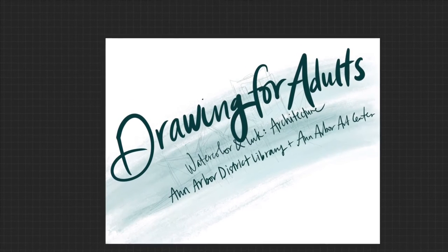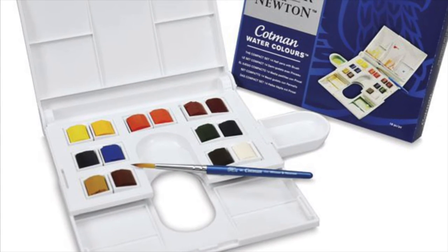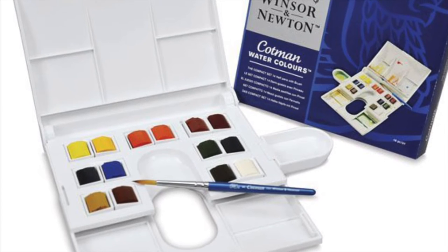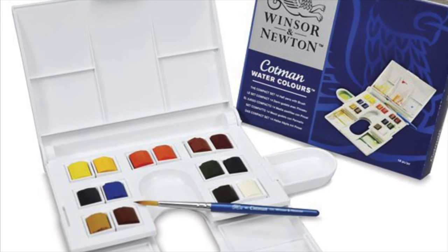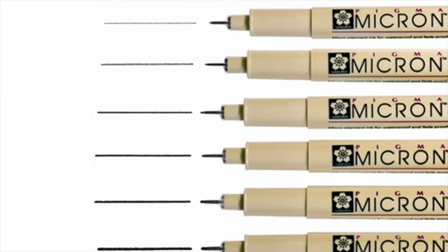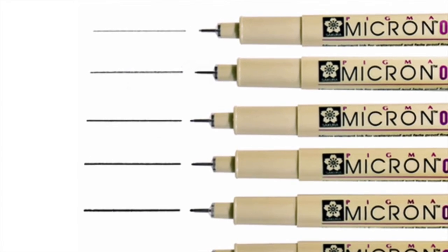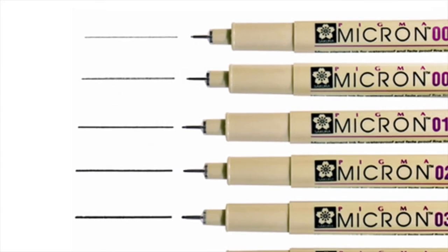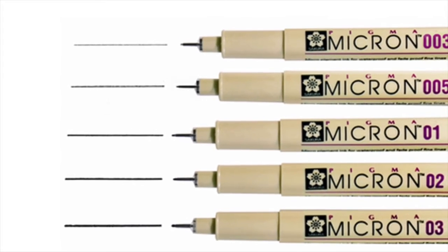We are doing a watercolor ink series where we're talking about architecture this week. If you don't have watercolors or ink pens, I really like this little travel set by Winsor & Newton, but any watercolors will be great. In ink pens, I also really like these Pigma Micron pens. That's what I prefer to use when doing any kind of ink line work because there's a variety of line widths. So we're going to be talking about architecture today using watercolor ink. I hope you enjoy today's lesson.